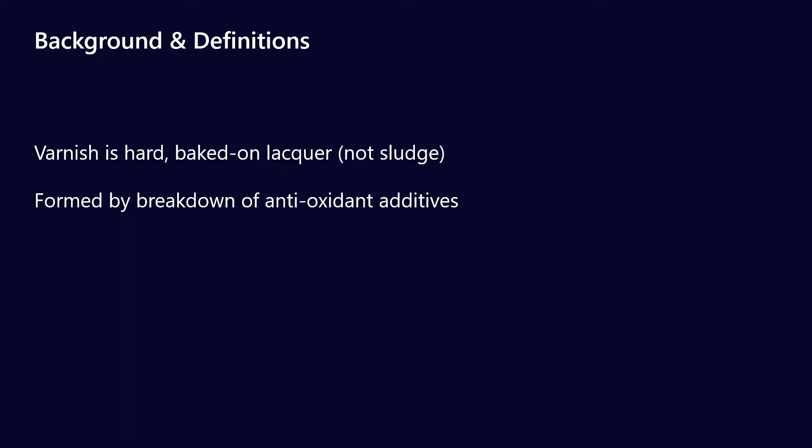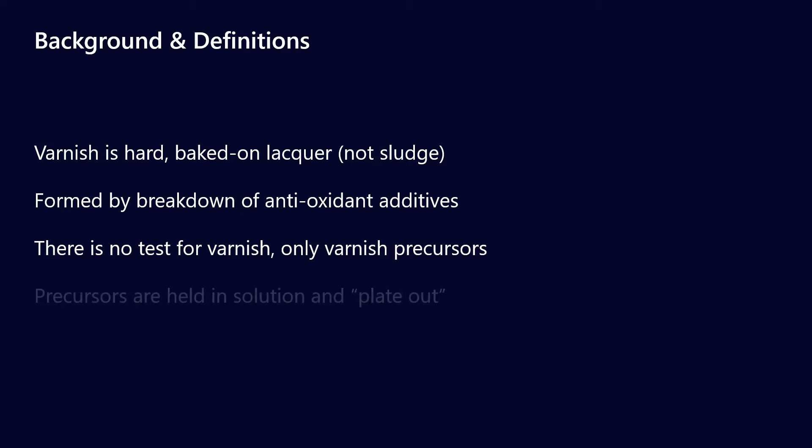The breakdown of the antioxidant package is the predominant material that goes into making varnish. There's also no direct test for varnish itself. We can test for varnish precursors in the oil, look at the oxidation stability of the oil, and look at the amount of aminic and phenolic antioxidant additives remaining. But we can't actually test whether varnish is occurring — really only a physical inspection will tell you whether there is varnish in your system.